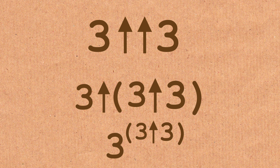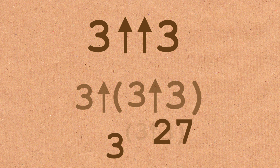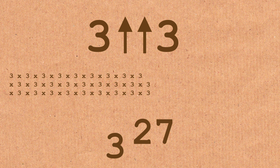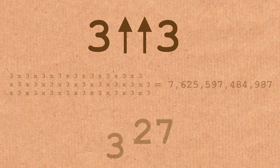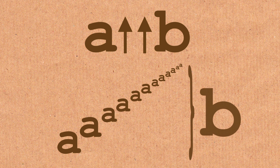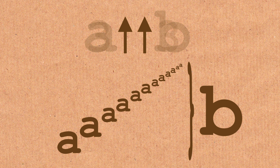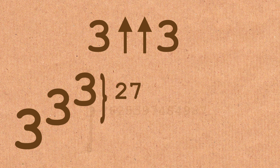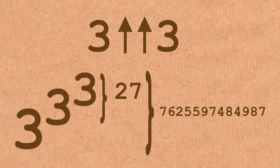We know from a moment ago that 3 arrow 3 was 27, so we have 3 to the 27, which is about 7.6 trillion. Another way to think about double arrows, which is very helpful, is that you are building a tower of this number of this height. So in our example, a tower of 3s which is 3 high. When you work it out, you go from top to bottom and right to left: 27 at the top, 7.6 trillion overall. So there's 3 double arrow 3 — a pretty big number.